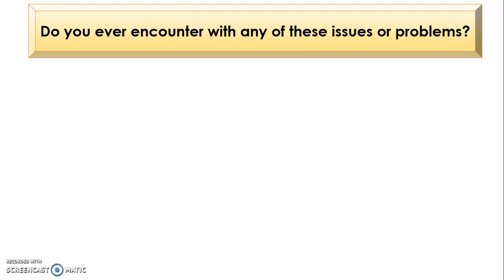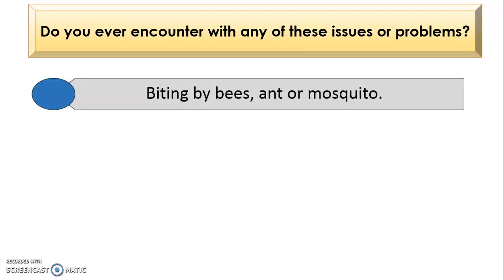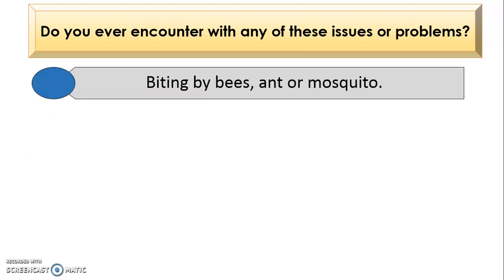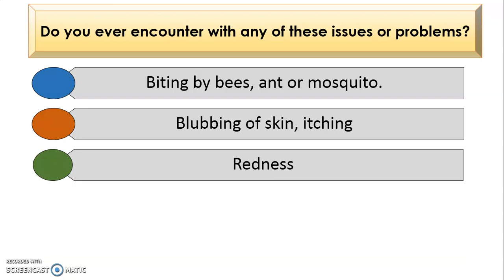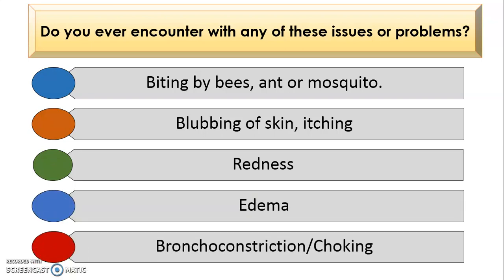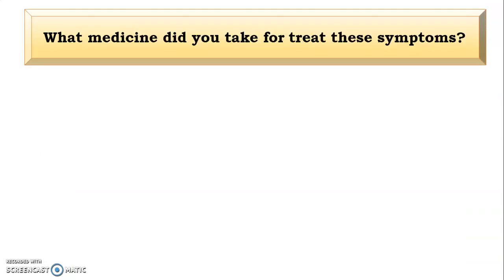Have you ever encountered issues such as the biting of a bee, ant, or mosquito? After a bite, you may experience swelling on your skin, redness, or edema. You may also have a problem with breathing or a choking problem. These are common symptoms triggered by any foreign antigen or insect bite.